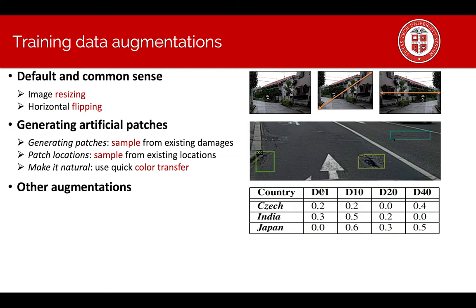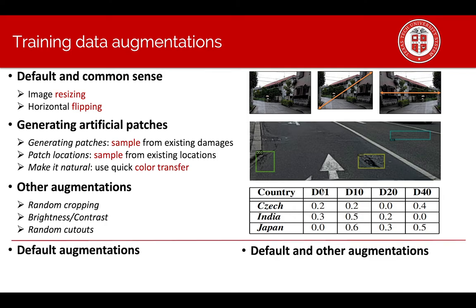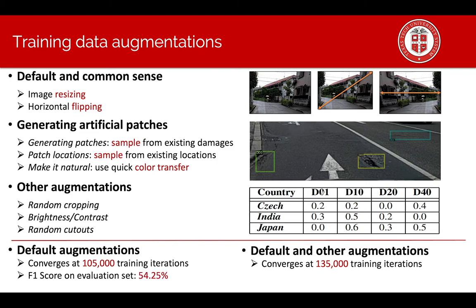We also experimented with other augmentation like random cropping, brightness contrast and random cutouts as well. Here are the results of using default augmentation versus default and other augmentations. It takes a lot longer to converge because we have more data. The F1 score reduced slightly with complicated augmentation and therefore we decide not to use complicated augmentation and only stick with default augmentation.